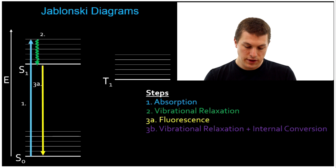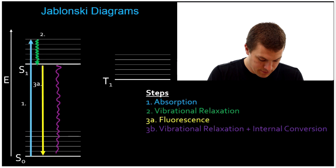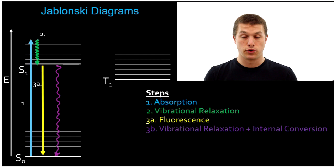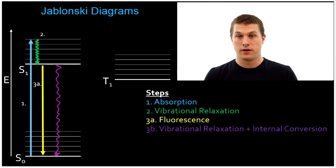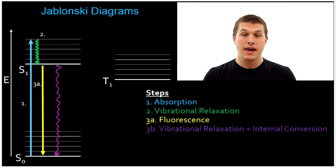The other thing that can happen is vibrational relaxation plus internal conversion. Our electron goes back down to the singlet state by giving up its energy as heat — that's non-radiative recombination. Fluorescence is called radiative recombination, where we're radiating energy as light. Non-radiative recombination is when all that energy is given off as heat. It's called vibrational relaxation because it's giving off energy as heat, and internal conversion because it's changing electronic states — going from the singlet excited state to the singlet ground state. That's 3B.